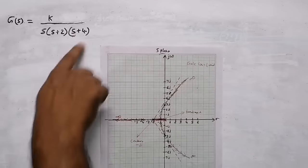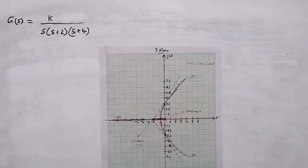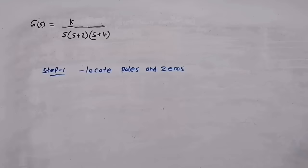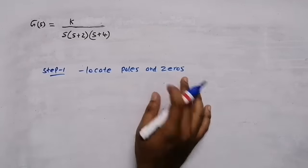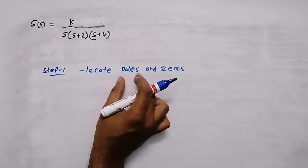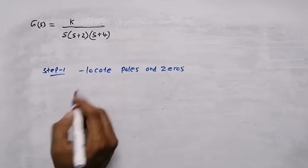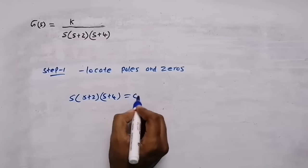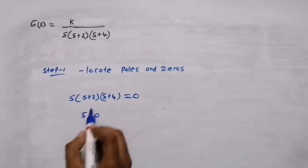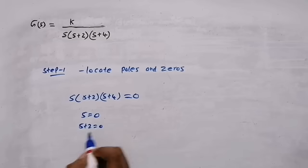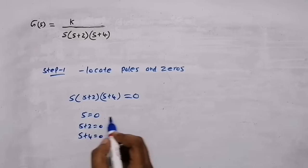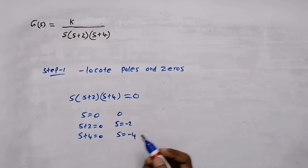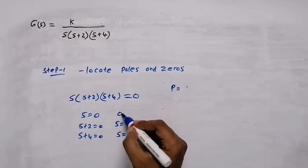In this video we are going to discuss how to sketch root locus of the system on a graph sheet. The first step is to locate poles and zeros. To get poles, equate the denominator equal to zero. Our denominator is the product of (s+2) and (s+4). Setting each factor to zero gives us poles at s=0, s=-2, and s=-4.